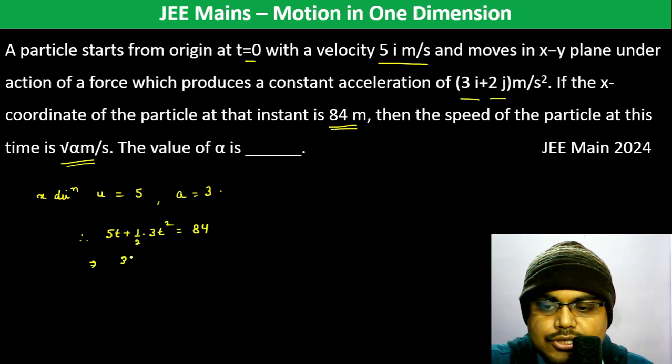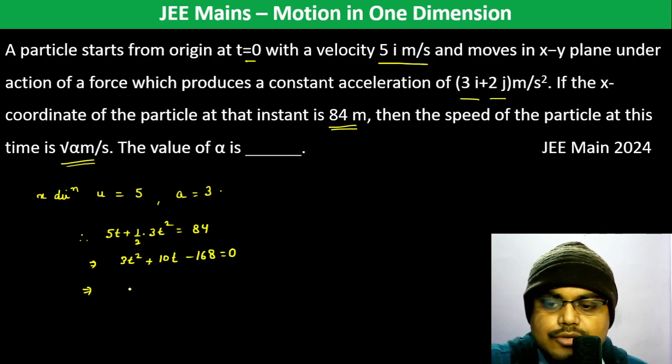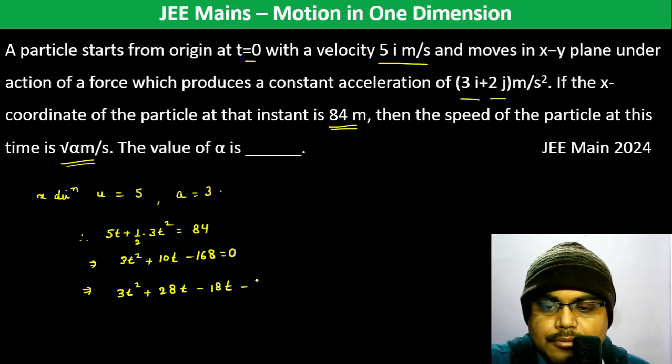This becomes 3t² + 10t - 168 = 0, which can be rewritten as 3t² + 28t - 18t - 168 = 0.